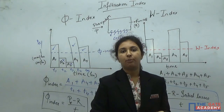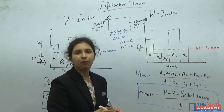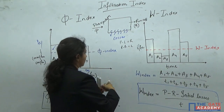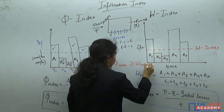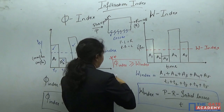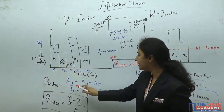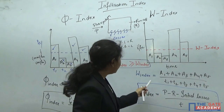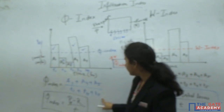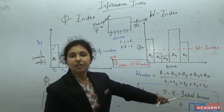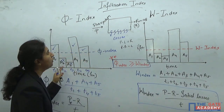Next, which is greater — Phi index or W index? It is always Phi index greater than or equal to W index. For uniform distribution of soil, Phi index equals W index. In Phi index, we take less area but also less time interval, making the numerator smaller but denominator also smaller. In W index, we take more area but also subtract initial losses. Therefore, Phi index is always greater than or equal to W index. That is all about Phi index and W index. Thank you.